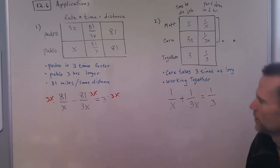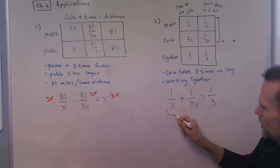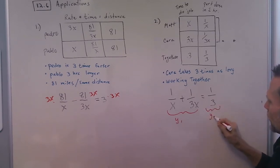And then with this equation, you could multiply again through by the LCD, or you could graph this into Desmos by putting this in for Y1 and then putting this in for Y2.